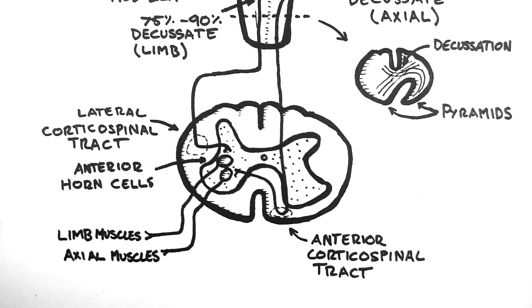So, in summary, the corticospinal tract is a two-neuron pathway. There is an upper motor neuron, which arises in the cortex, and a lower motor neuron, which arises in the anterior horn.